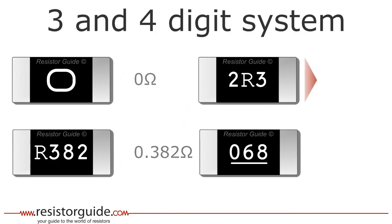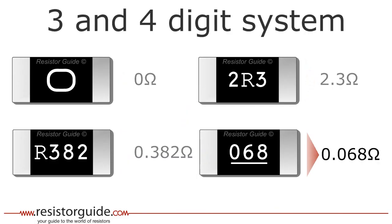The third example has the R, or decimal point, between the 2 and the 3, which means a value of 2.3 ohms. Due to space constraints, sometimes the numbers are underlined instead of using an R. So this resistor has a value of 0.068 ohms.